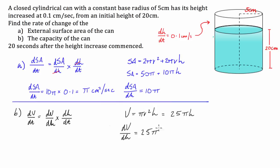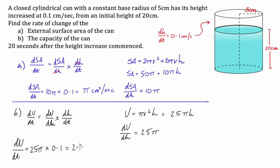So what we can do now is say that dV/dt equals DV/DH, which is 25π, times DH/DT, which is 0.1. If we divide 25 by 10, we get 2.5. So this is going to be 2.5π centimetres cubed per second. It's important that we write our units down.